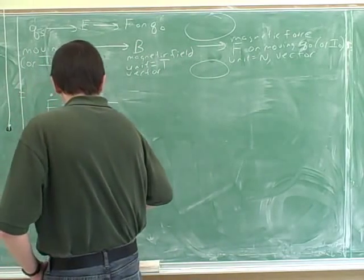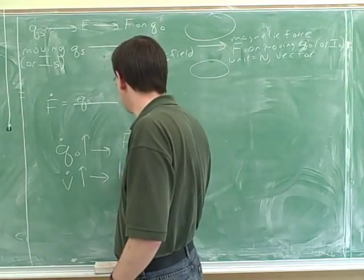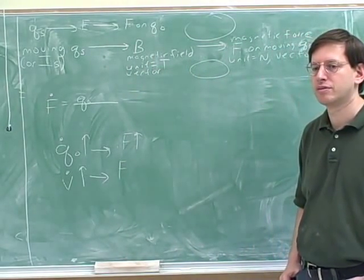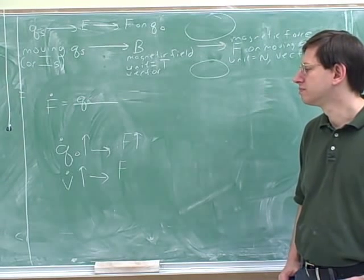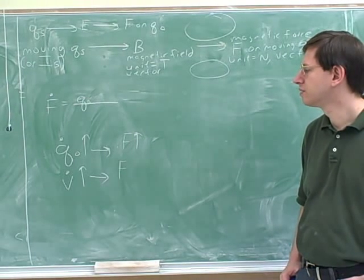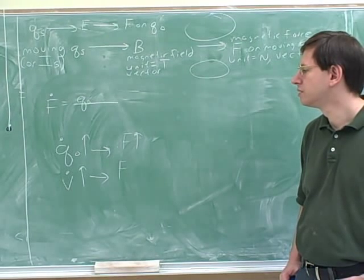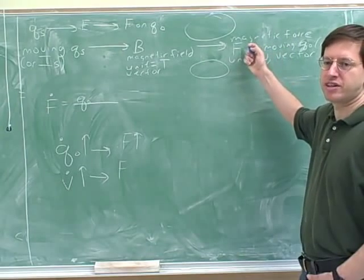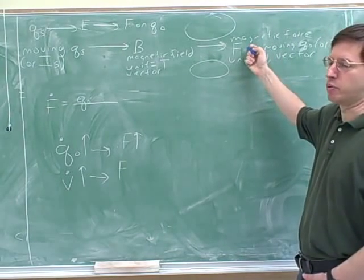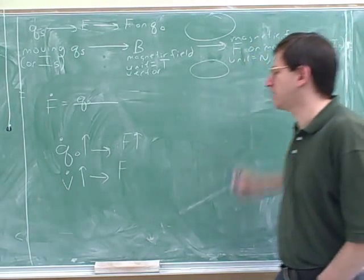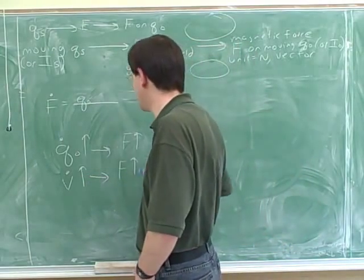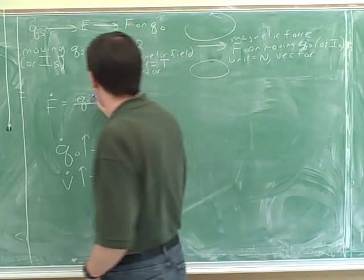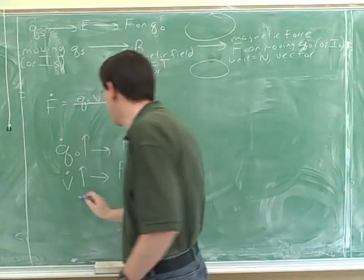Let's say you increase the speed of the charge and hold other things constant. Do you think that would increase or decrease the magnetic force? We know that it's only the fact that we're moving that allows us to have any magnetic force at all. If we weren't moving, the force would be zero, so it stands to reason the more motion there is the greater the force. So V goes in the numerator — it has a direct relationship with the force.